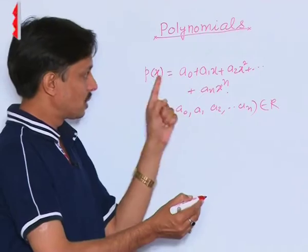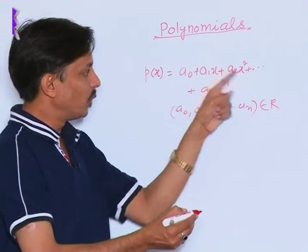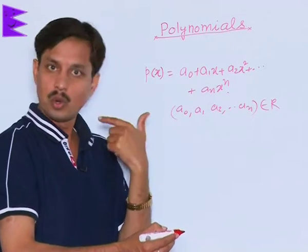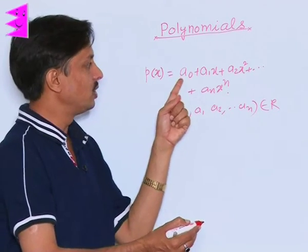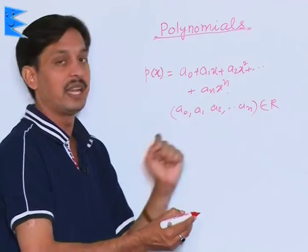So when some real numbers are attached with variables of one type or two types, that is a0 plus a1x plus a2x² plus ... plus anx^n.